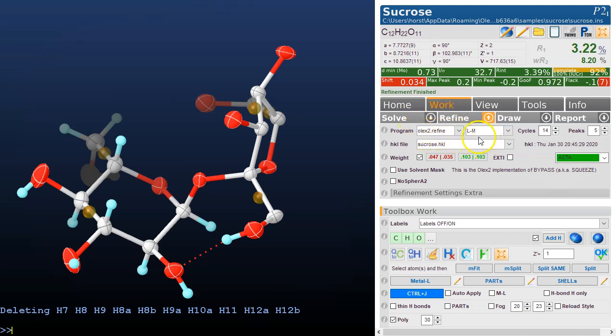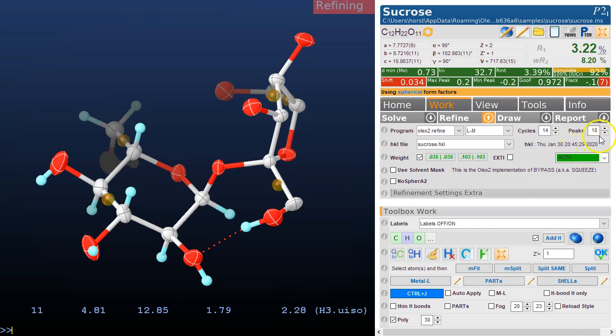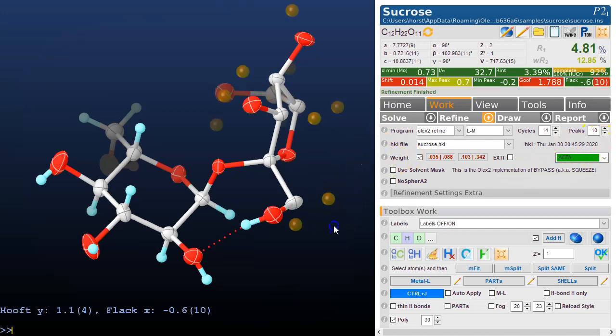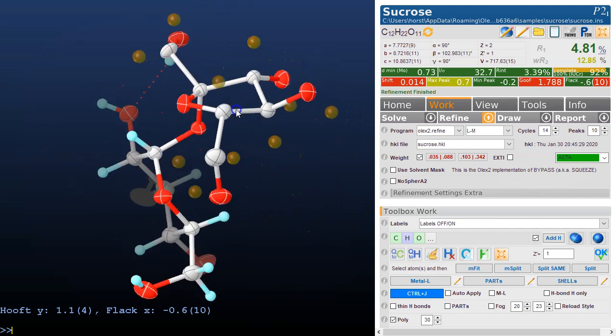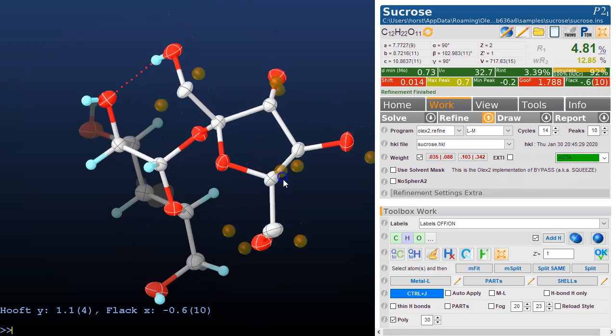If I refine this, then Olex2 automatically increased that to 10 peaks because it figured out that there's probably 10 hydrogens missing. If you look at this, it's fairly clear that these have all been found, so Olex2 doesn't show you too many peaks that you might not want.